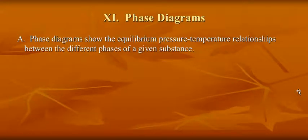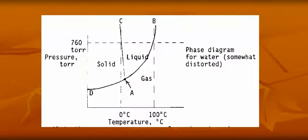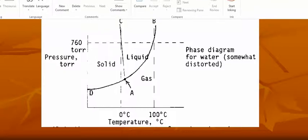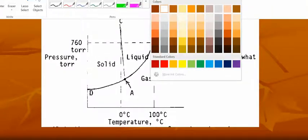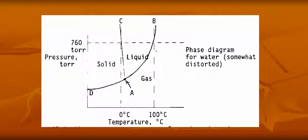Phase diagrams show the equilibrium pressure temperature relationships between the different phases of a substance. Here's the phase diagram for water. It shows at different temperatures and pressures what the state of water will be.